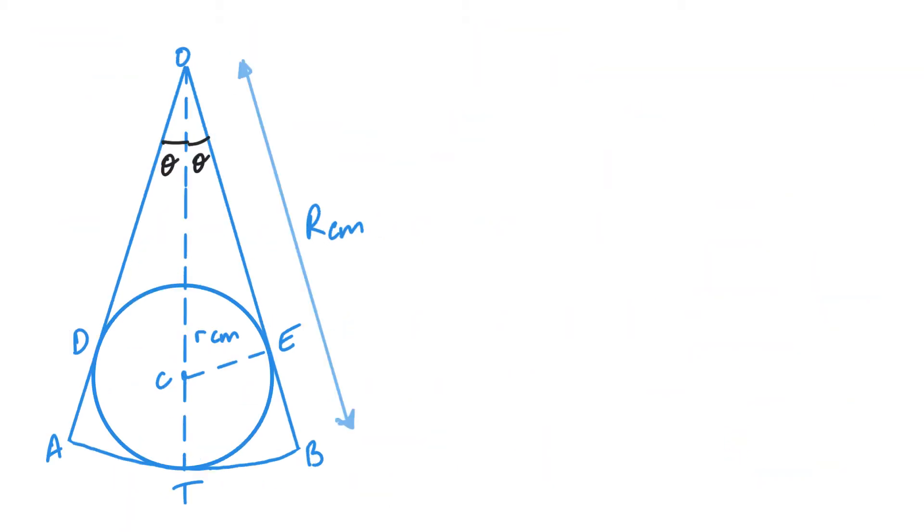So O to C is going to be larger minus smaller. So if I look on this diagram, we've got OT is going to be the same as larger. We know that CT is going to be a small radius. And OC is going to be OT minus CT. So that's going to be R minus little r. And that's part A.